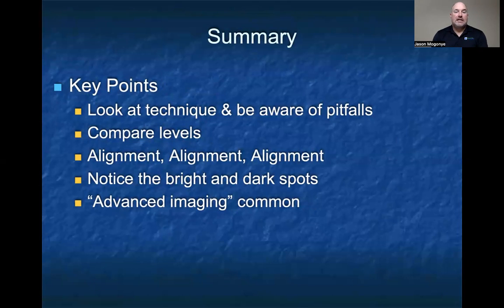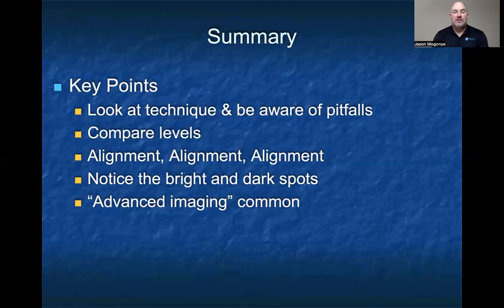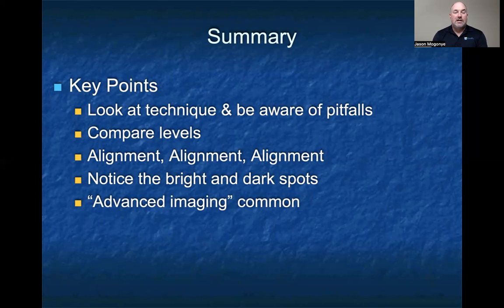In summary, we talked a lot about looking at technique and being aware of the pitfalls of the images. Make sure you're comparing one level to the next — it's always nice to have something to compare to. Always check your alignment, whether you're looking AP, lateral, or on the obliques — alignment is very important. Look for the bright and dark spots: sclerosis or potential artifacts. Advanced imaging is very common in the low back, and many MRIs are ordered because of multifactorial back pain. It's important to correlate advanced imaging to your radiograph and to the patient's condition, making sure you're treating the right thing. That concludes our talk on the adult lumbar spine radiograph for the family medicine series. Thank you very much.